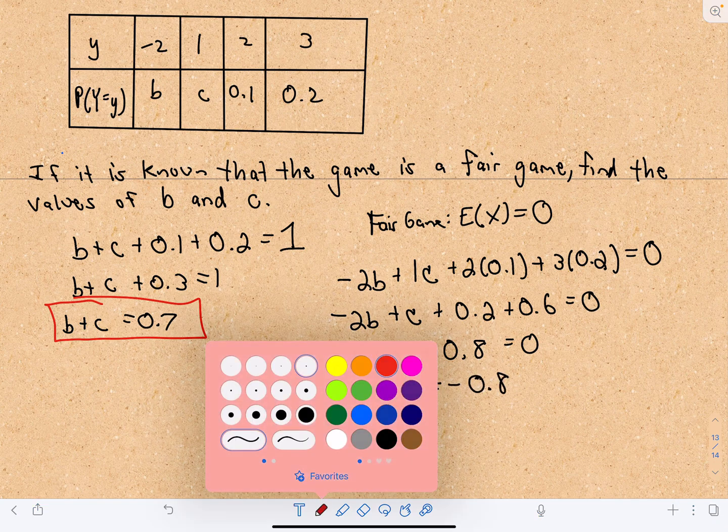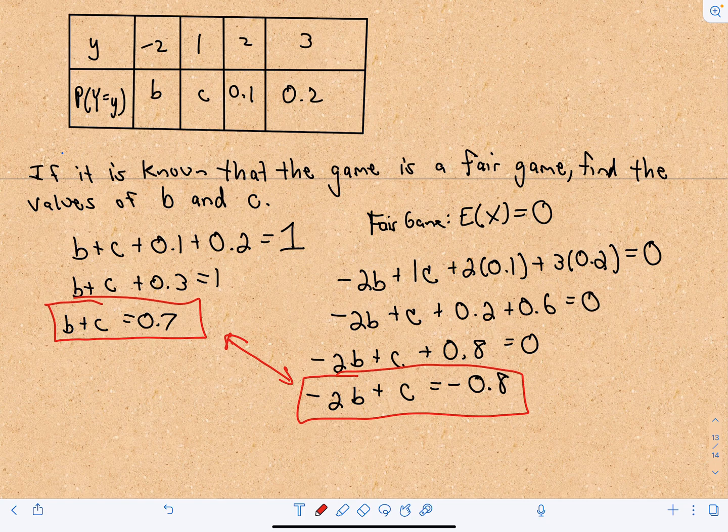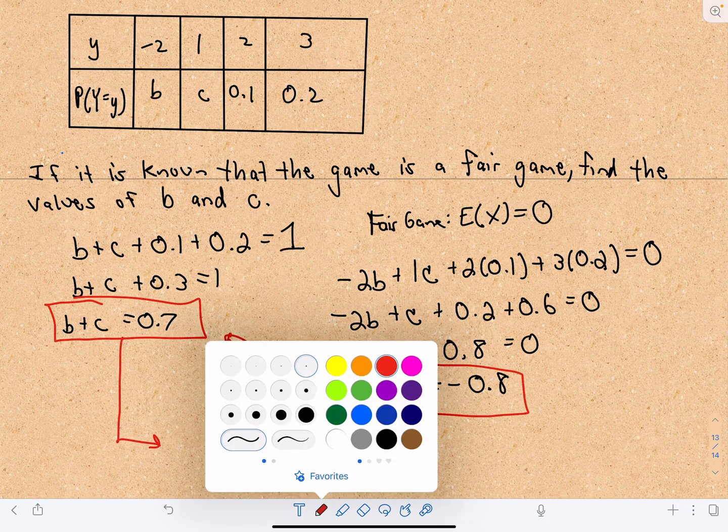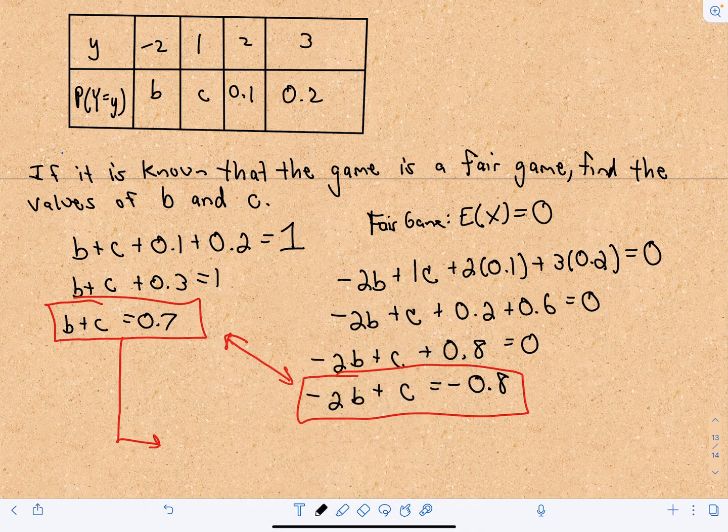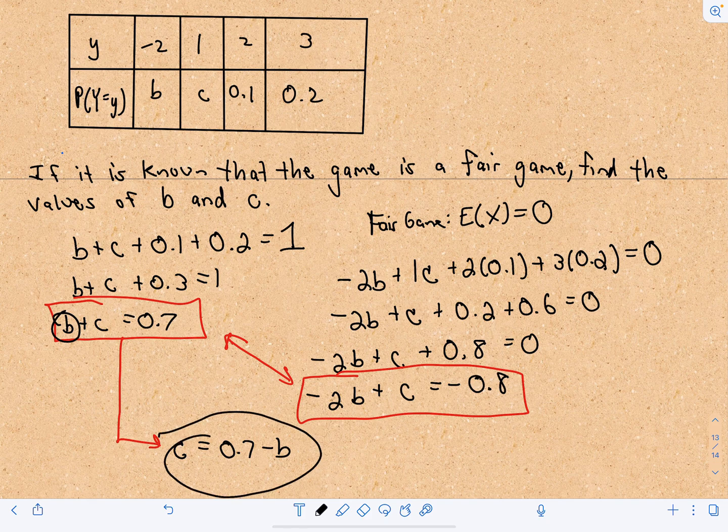But now we have these two equations. We've got two unknowns and we've got two equations. So what I'm going to do is I'm going to solve for one of these and I'm just going to solve for C. So I can say that C equals 0.7 minus B. If I subtract B from both sides, that'll give me this new equation.